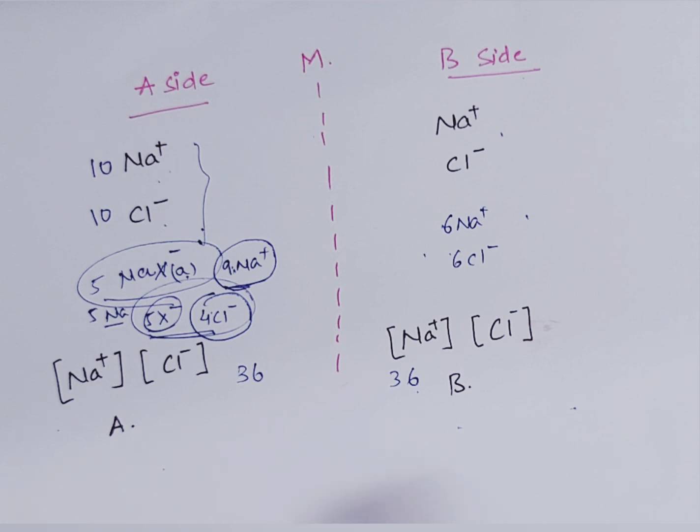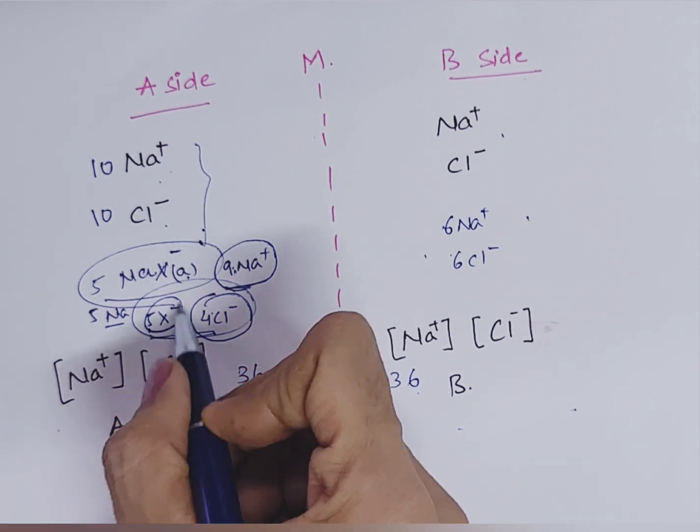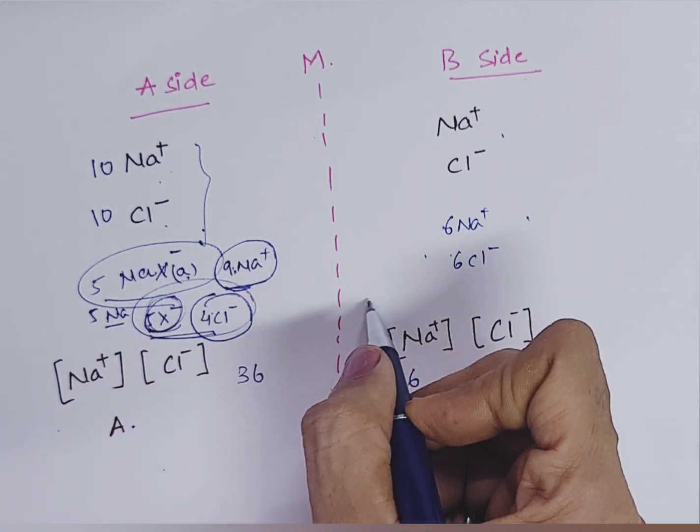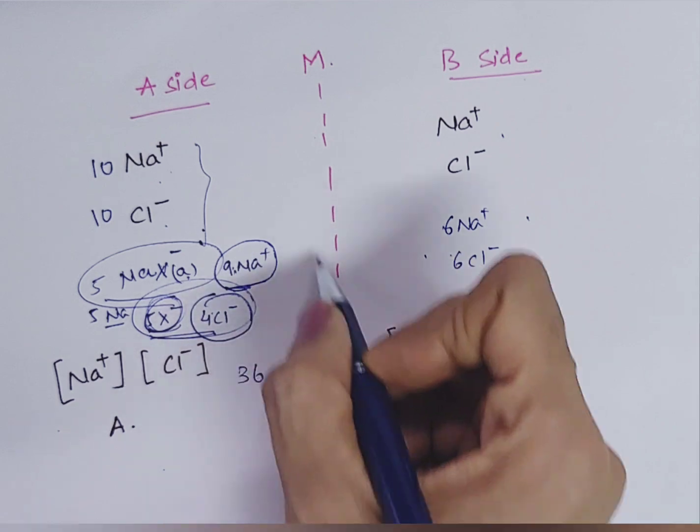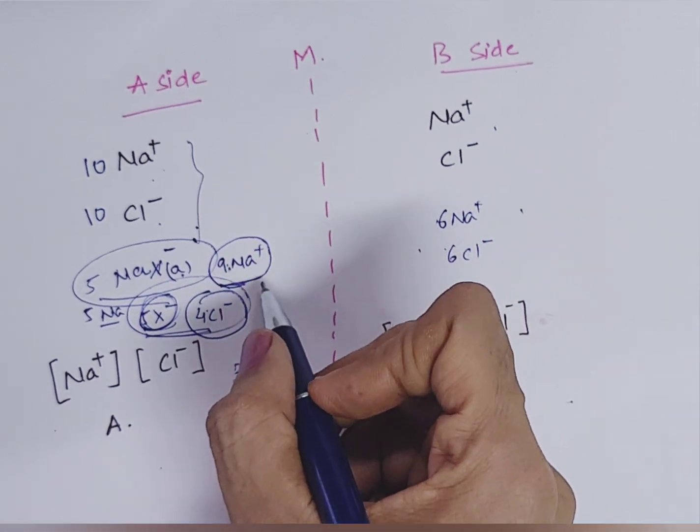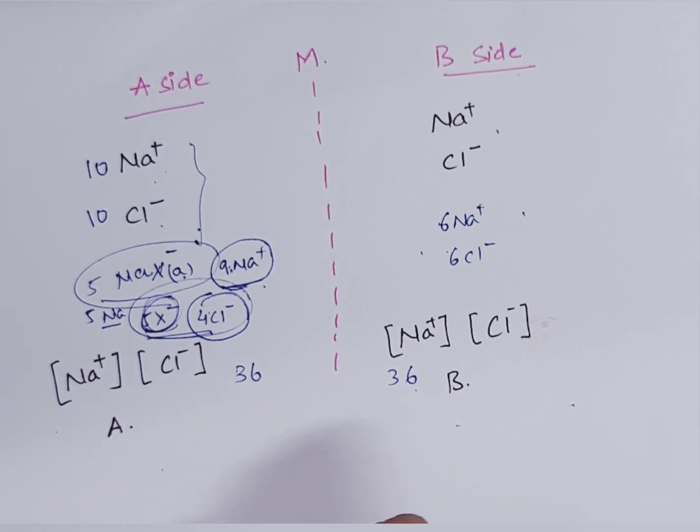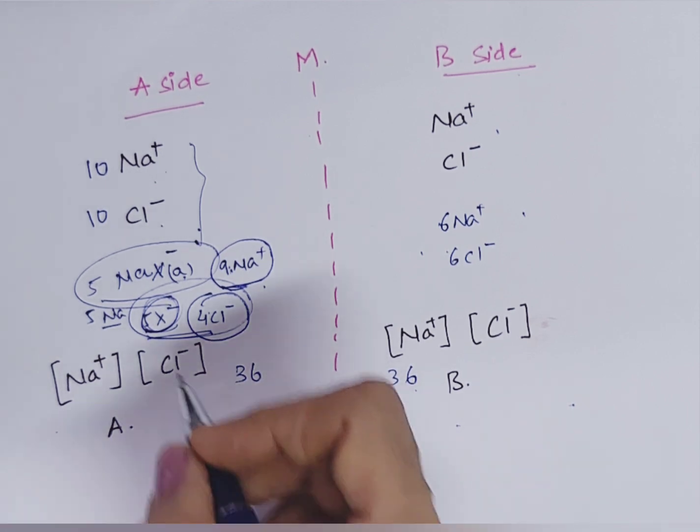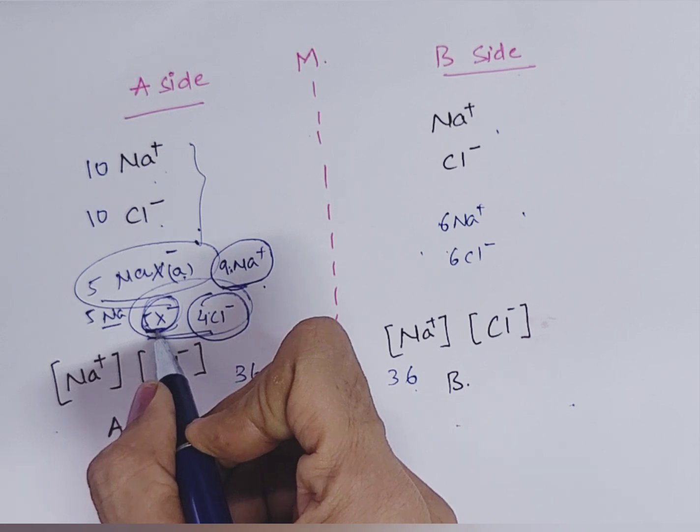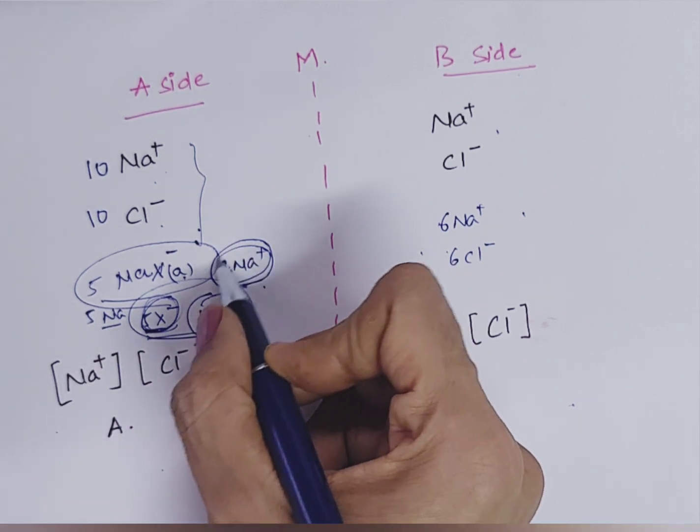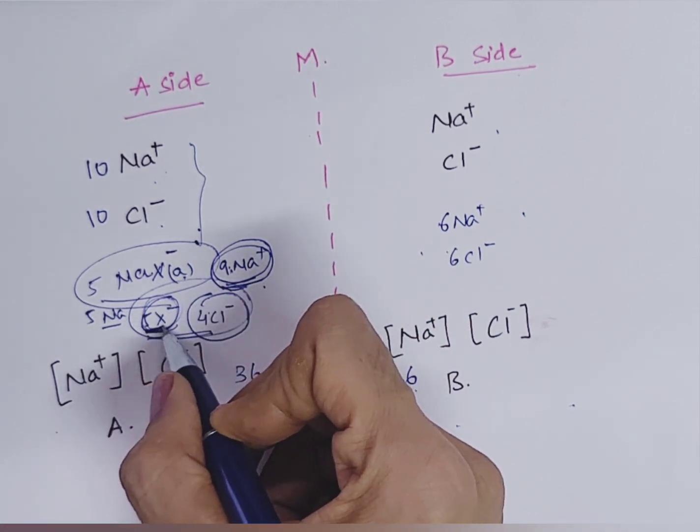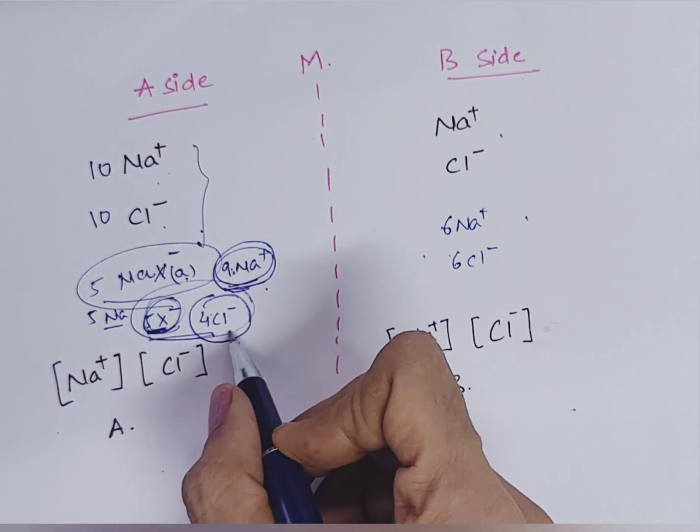What does it denote? If we have any ion which cannot pass through the cell membrane, that will affect the distribution of other diffusible ions. So at equilibrium, diffusible cation concentration on the side of the membrane containing this X minus, diffusible cations are more. Why? Because we have more anions and diffusible anions are less.